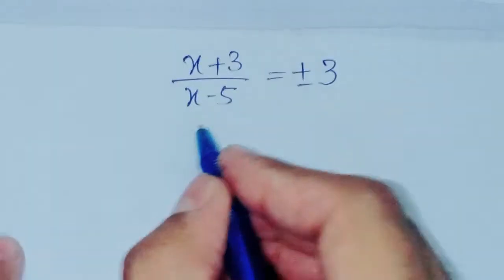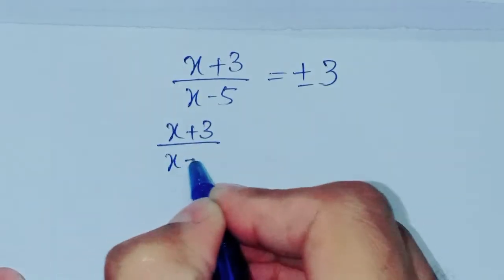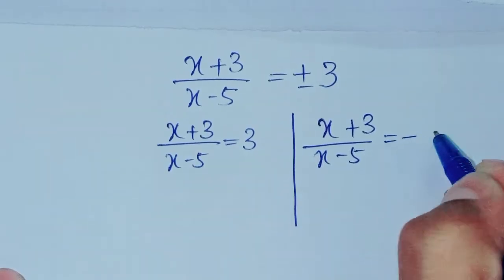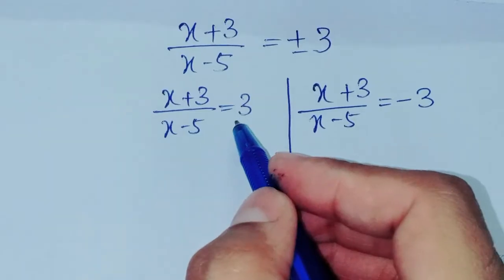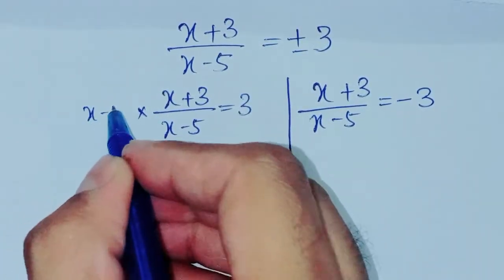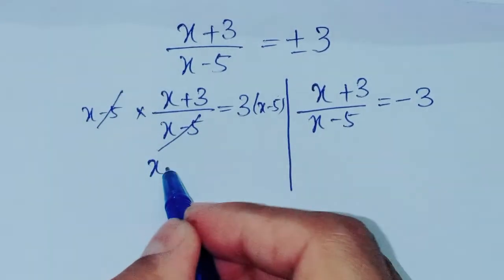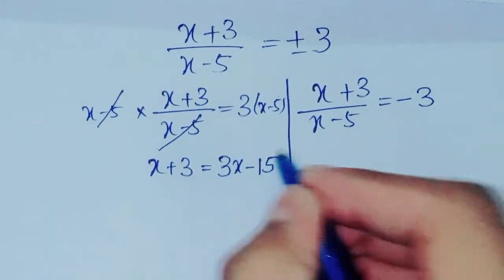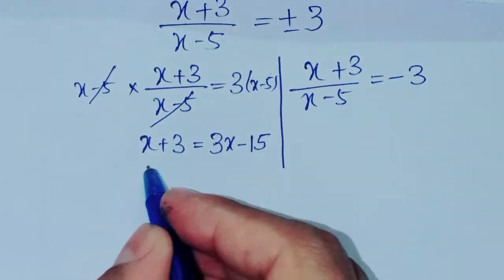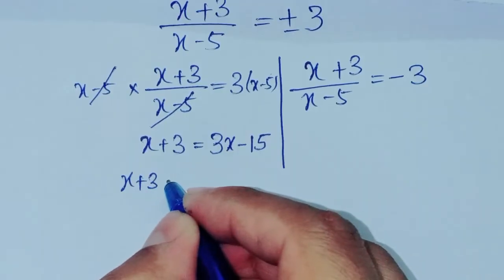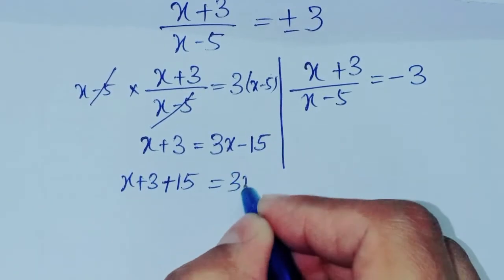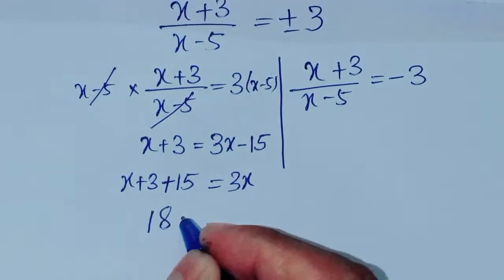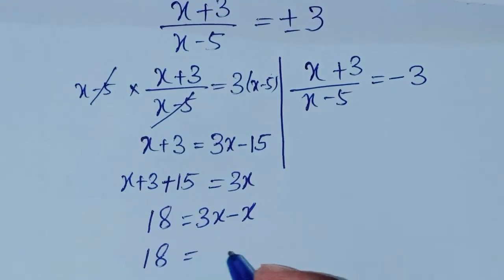These give two values. Case 1: x plus 3 over x minus 5 is equal to 3. Multiplying both sides by x minus 5, so x plus 3 is equal to 3x minus 15. Shifting terms: 3 plus 15 gives 18, and 3x minus x gives 2x. So 18 is equal to 2x.